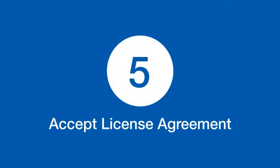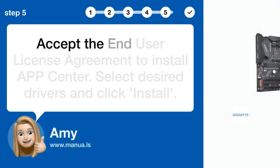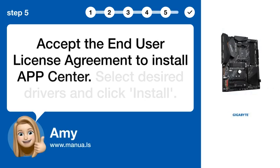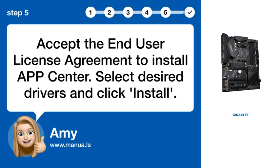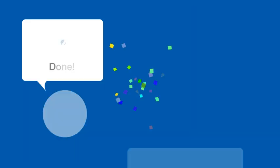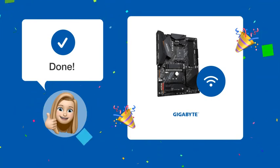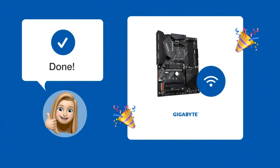Step 5: Accept the License Agreement. Accept the End User License Agreement to install APP Center. Then select your desired drivers and click Install. Now you should be able to install the Wi-Fi driver on your Gigabyte B550 AORUS Elite without any issues.